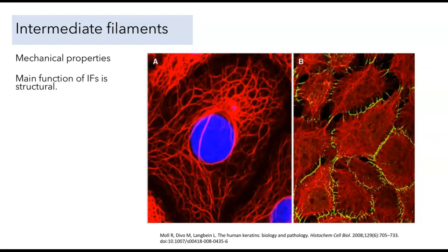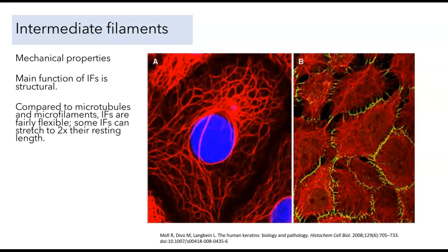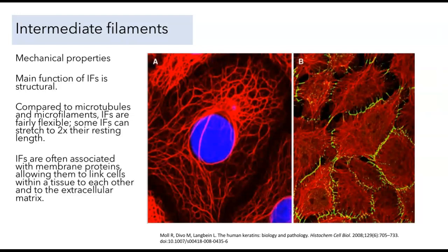The main function of intermediate filaments is structural. Pictures of skin epithelial cells stained to show the keratin network reveal how extensive it is and how it spreads through the cell. The network formed is relatively flexible — compared to microtubules and microfilaments, intermediate filaments can be stretched up to two times their resting length and then spring back, giving them an elastic property that microtubules and microfilaments really don't have. Intermediate filaments are also often associated with membrane proteins, allowing them to link the cytoskeleton of one cell to another cell within a tissue, as well as to the extracellular matrix.